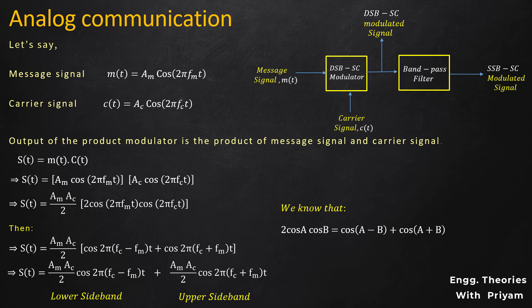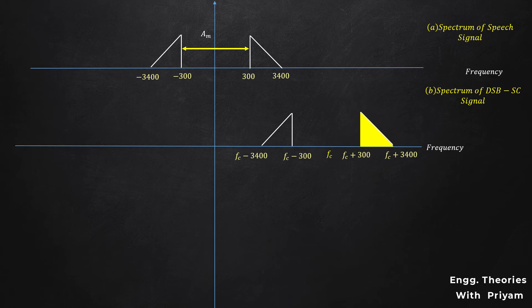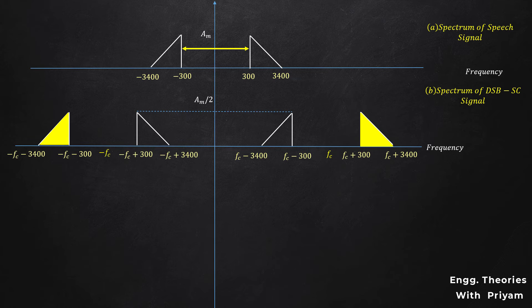Now let's see how to modulate a speech signal using this filter method. In the field of communication, the usable voice frequency band ranges from approximately 300 to 3400 Hz. For the DSBSC modulation of this speech signal, we shift it to frequency fc in the positive x-axis and to −fc in the negative x-axis, with amplitude halved. There is a gap of 600 Hz between the two sidebands. To select either sideband, we use a bandpass filter. Even a practical filter without sharp cutoff can recover either sideband because of this 600 Hz gap.